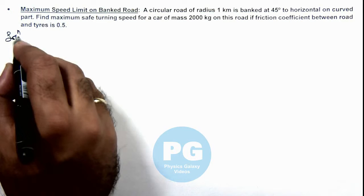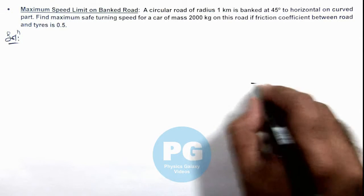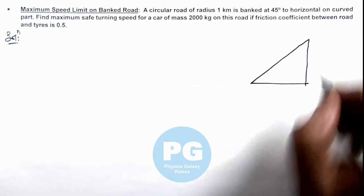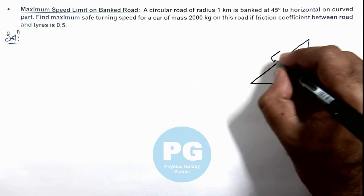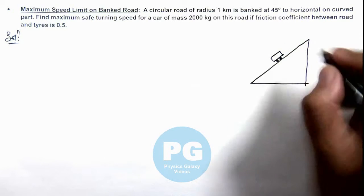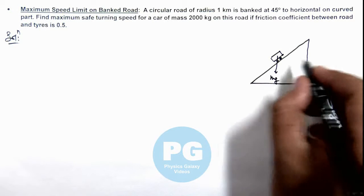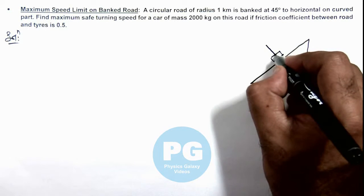If we draw the cross sectional view of a turning car, it'll look like this for a banked road. Here say if this is the car which is taking a turn, it'll be experiencing mg in downward direction. A normal reaction on its tires will be acting perpendicular to the road.